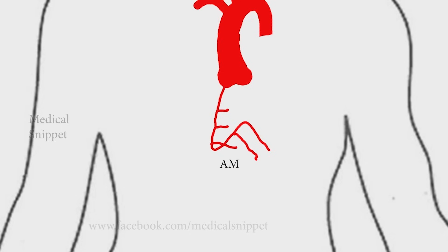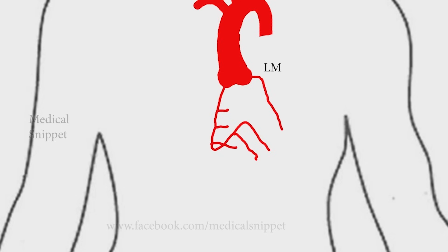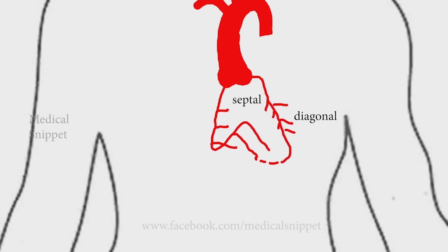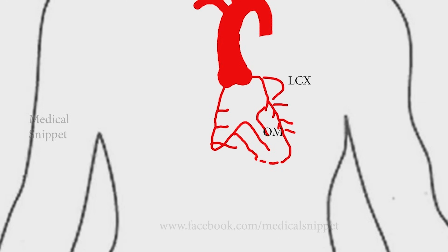The left main artery bifurcates into the left anterior descending and circumflex arteries. The left anterior descending artery gives rise to septal and diagonal branches. The circumflex artery gives rise to obtuse marginal branches.